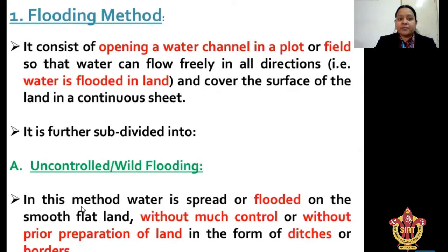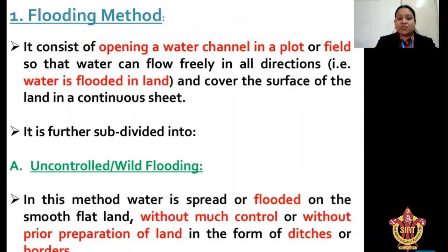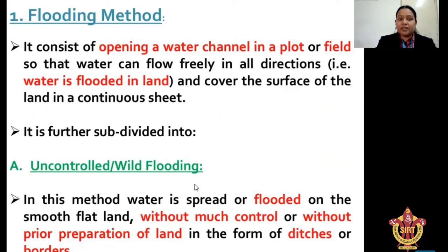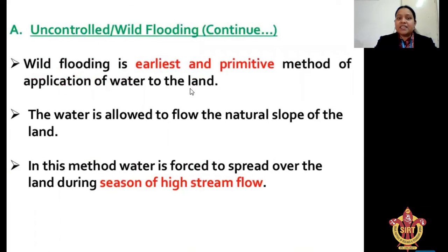Uncontrolled wild flooding: in this method, water is spread or flooded on smooth flat land without much prior preparation and without much control in the form of ditches or borders. Wild flooding is the earliest and most primitive method of applying water to land. The water is allowed to flow along the natural slope of the land. Water is forced to spread over the land during the season of high stream flow.